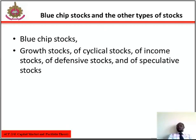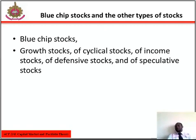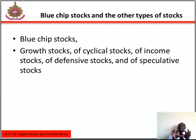Then we have income stocks. Some people, particularly the elderly and retired, buy stocks for current income. While in recent years stocks have yielded less on average on current dividends than bonds or the return on savings accounts, there are also some stocks which may be classified as income stocks because they pay a higher than average return. Income stocks are those that yield generous current returns.